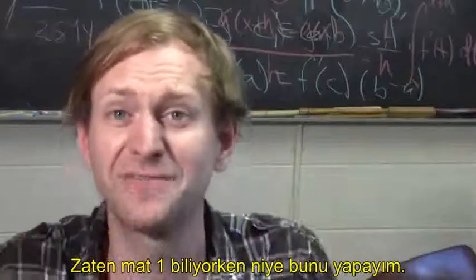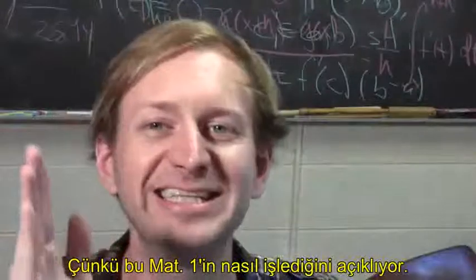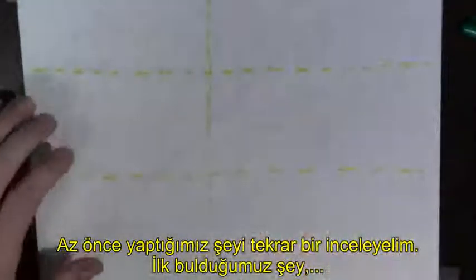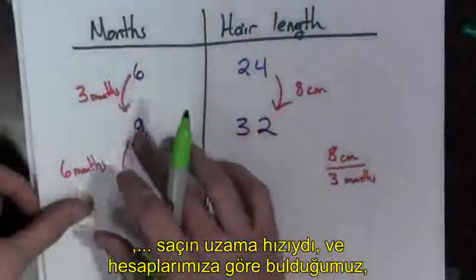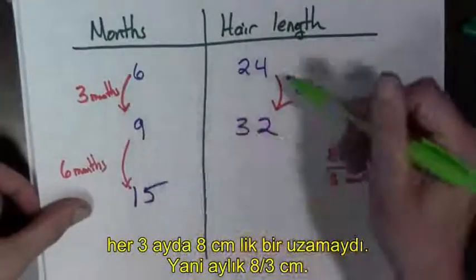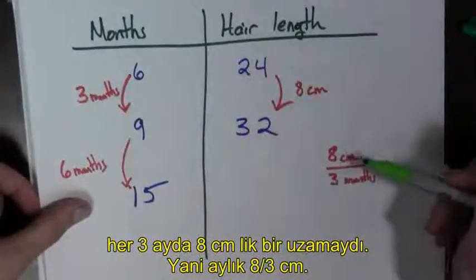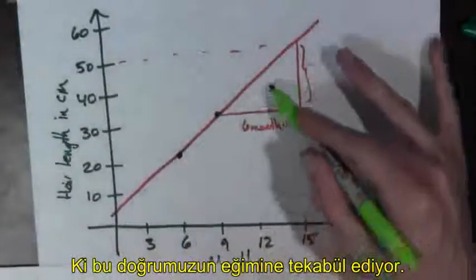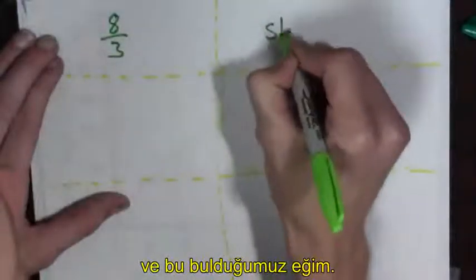Why would I do this if I already know algebra? It's because it explains how the algebra works. Let's rehash what we just did. The first thing we did was we found the rate at which the hair was growing. And we found out for every three months, the hair grew eight centimeters. So, we got eight over three centimeters per month. This corresponds to the slope of the line.